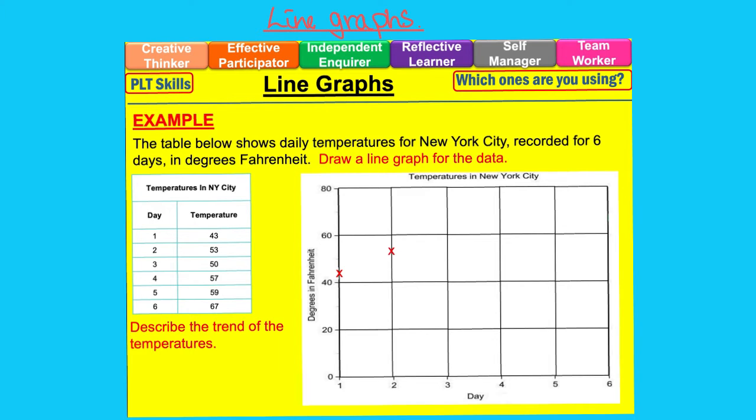143, 253, 350, 457, 559, 667. Now join each pair with a straight line.